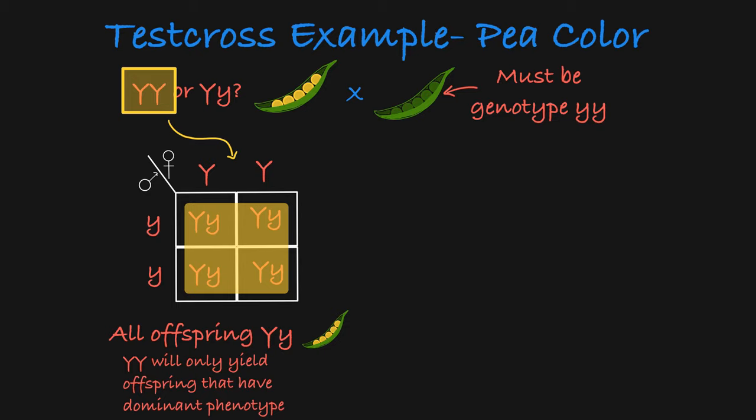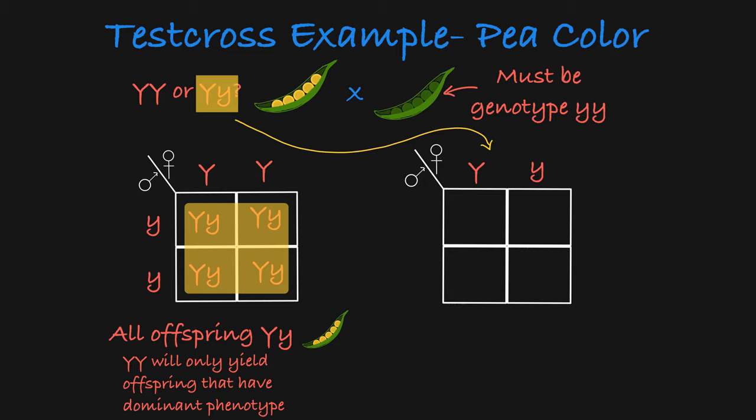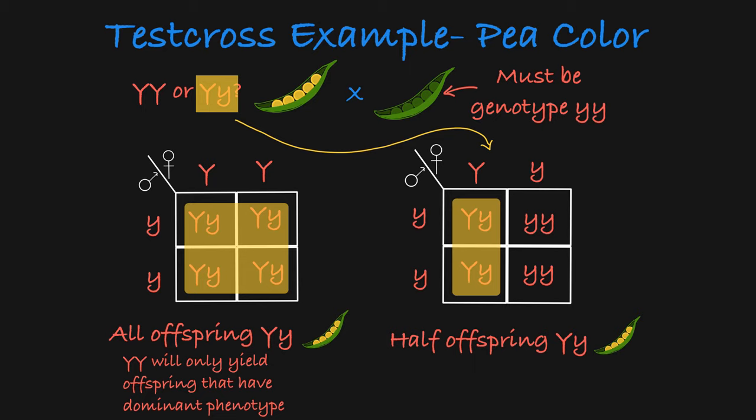If the plant is heterozygous and we cross it to a green pea plant that is homozygous recessive, then half of the offspring will be yellow and half will be green. The fact that this cross can produce green offspring means that the parent must be passing on the recessive allele to its offspring and therefore must be heterozygous.